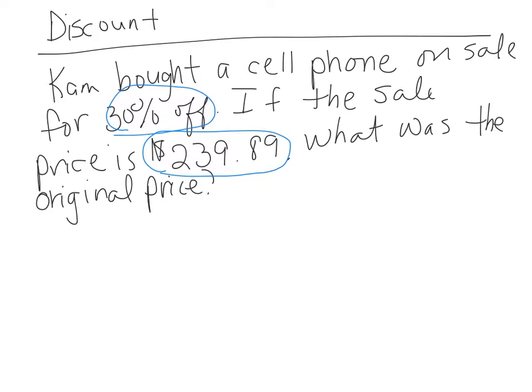So they're giving you the sale price and they want to know what the price was before you took it on sale. So this one is a little bit tricky. So we've already taken the 30% off, so we're going to look at the other percent, which would make it 70% because 30 is off, but it's still 70%. So the opposite.